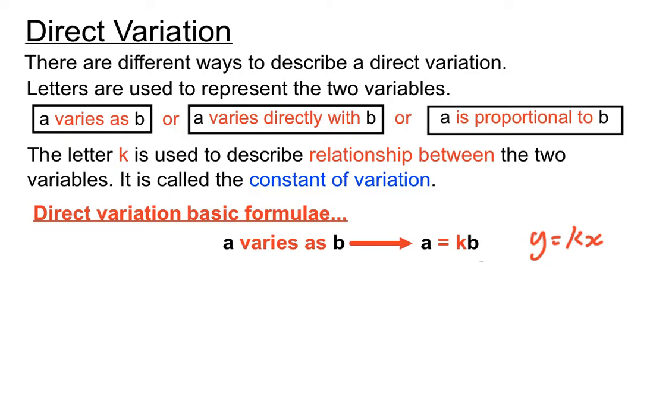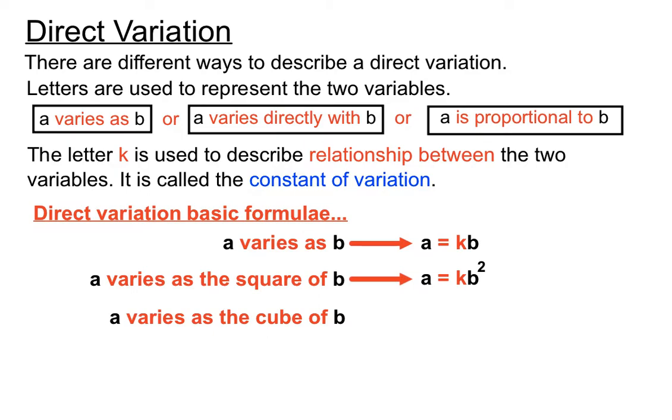There are some slight different versions as well. If you have a question that says A varies as the square of B, then the direct variation basic formula goes from A equals KB to A equals KB squared. And if they say A varies as the cube of B, still a direct variation, but we'd have A equals KB cubed. So if you miss those words because you're reading too quickly when you read the question, that's going to make a big difference and it's unlikely that you'll get the question right if you don't base the whole question on the correct basic formula.